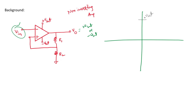Applying the voltage division rule, some positive voltage Vx is available at the positive input node. When the input voltage V_in is less than Vx, the positive terminal voltage is greater than the negative terminal voltage, which means the output will remain at plus Vsat.